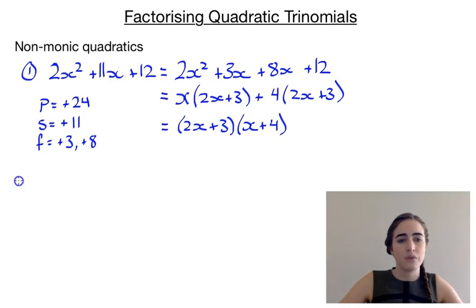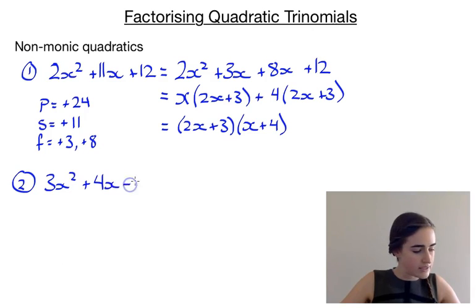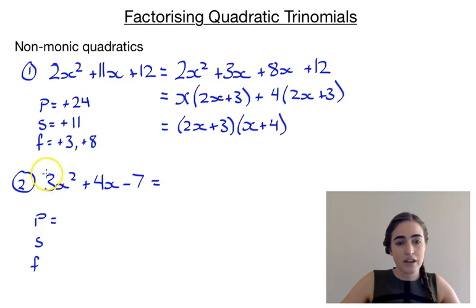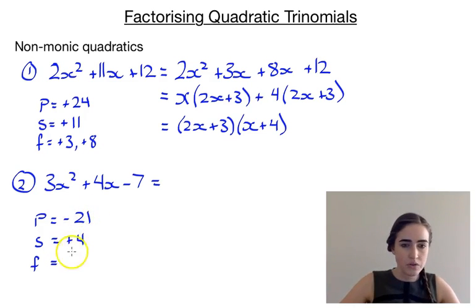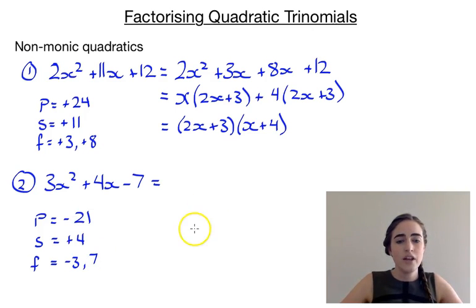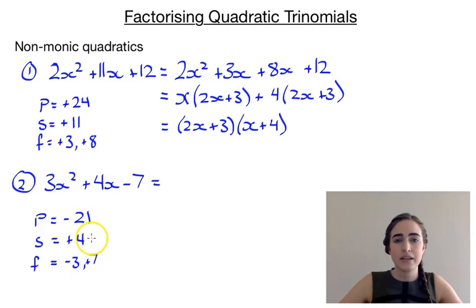There are a few more steps with non-monics. Let's look at a second example: 3x squared plus 4x minus 7. Using PSF, our product is going to be 3 multiplied by minus 7, giving us minus 21. The sum is going to be positive 4. So we need two numbers that multiply to give minus 21 and add to give 4. Going through the factors of 21, you should end up with minus 3 and positive 7 — they multiply to give negative 21 and add to give positive 4. So we split the 4x into a minus 3x and a plus 7x, giving us 3x squared minus 3x plus 7x minus 7.